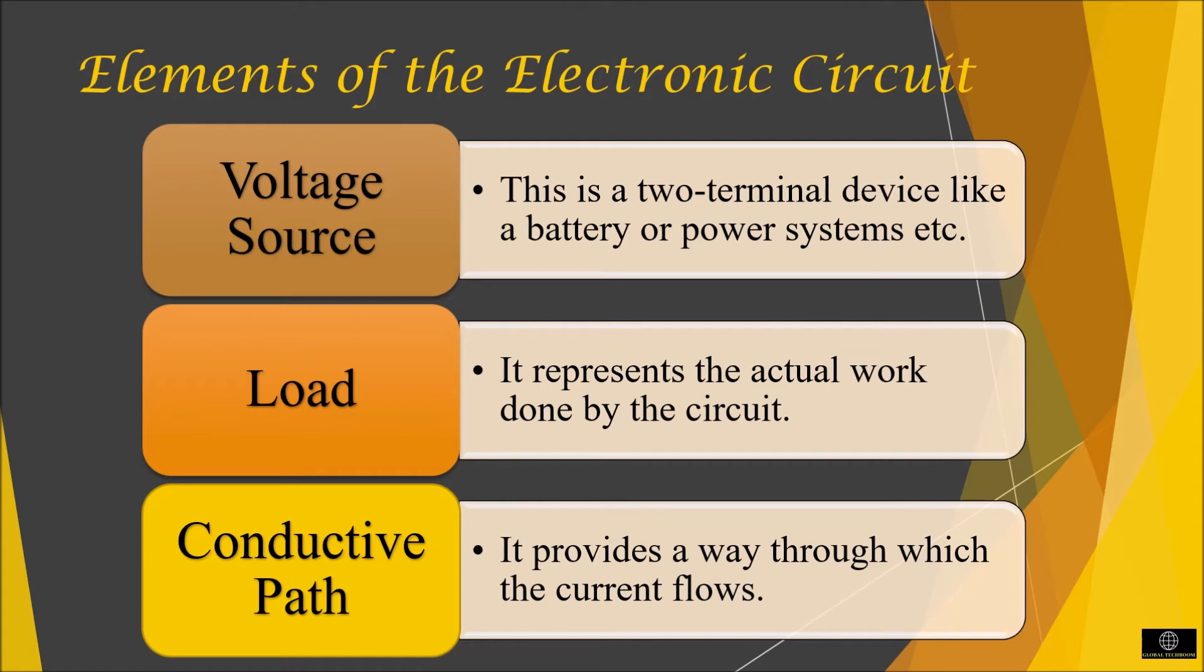Load: It is an element in the circuit that consumes power to perform a particular function. The load can be a simple bulb or a combination of components. Conductive path provides a way through which the current flows. The path starts from the voltage source, travel through the load and then returns to the voltage source. This path must form a loop from the negative side of the voltage source to the positive side of the voltage source.